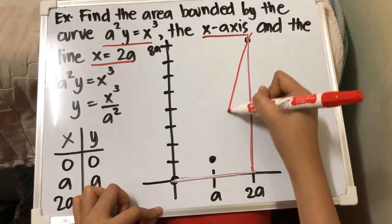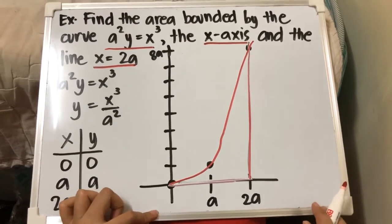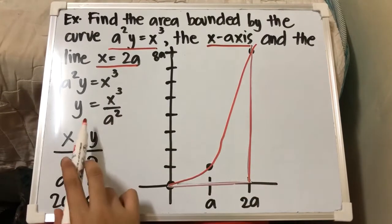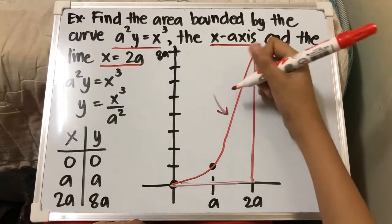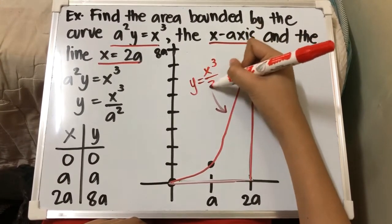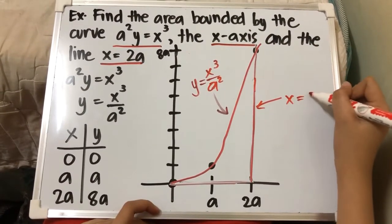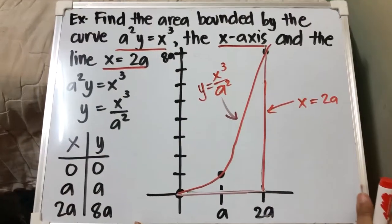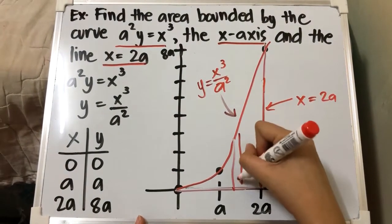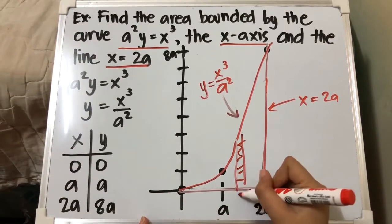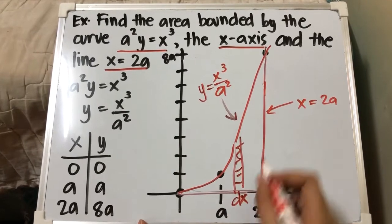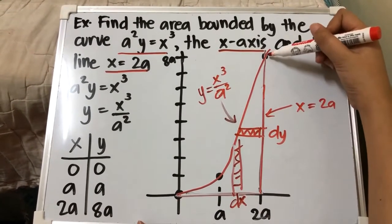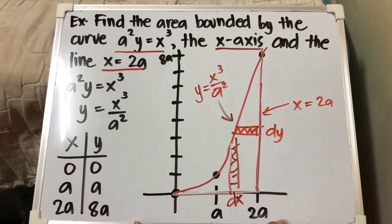We can solve this in two ways: via vertical strip or via horizontal strip. The area is enclosed by the curve, x = 2a, and the x-axis. Using a vertical strip, our limits of integration are from 0 to 2a in terms of x. Using a horizontal strip, our limits would be from 0 to 8a, the highest point on the curve.